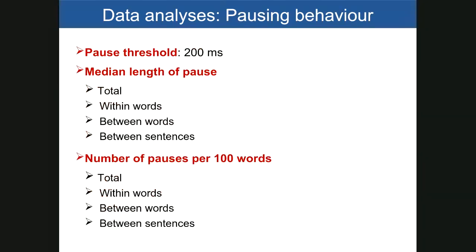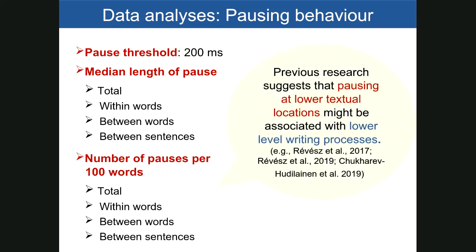Keystroke logging software also gives information about which function keys were used — for example, in one case a participant almost deleted everything they had written. You can also get graphical outputs from InputLog, including automatic indices for pause length and number of pauses. We classified pausing behaviors according to text location: whether they occurred within words, between words, or between sentences. Our pause threshold was 200 milliseconds, which counts as a low threshold. Normally, writing studies adopt a 3,000 millisecond threshold, but this doesn't allow for capturing lower-level writing processes. The reason we looked at text location was because pausing at lower textual units tends to be associated with linguistic encoding processes.